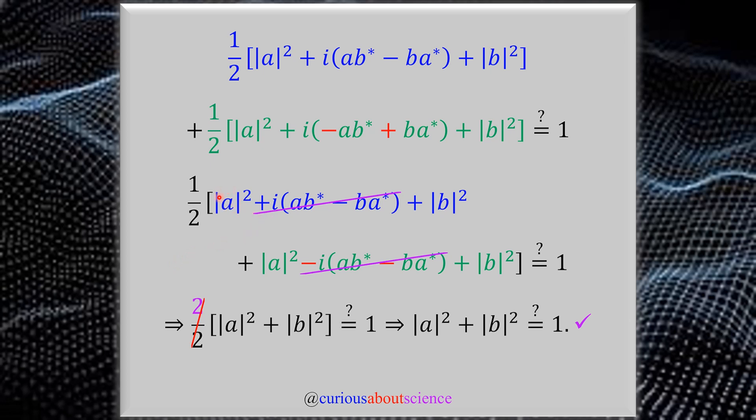Now we see that we get a magnitude A squared and a magnitude A squared, so we have two of them. We also have two magnitude B squareds, so we could factor out a 2. What do you know? We get a cancellation with the 1/2. So what we end up with is magnitude A squared plus magnitude B squared. Does that equal 1? Well, if you recall, this was a general state that was normalized, so we get back the normalization condition. So yes, they do sum to 1.